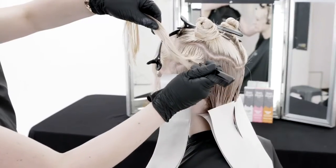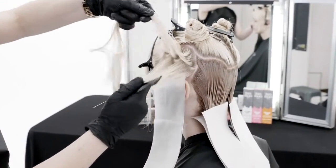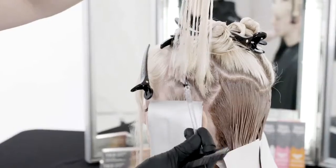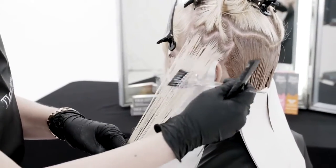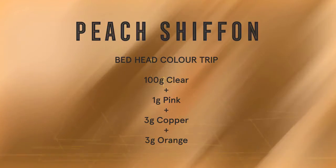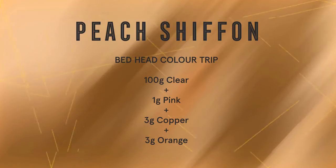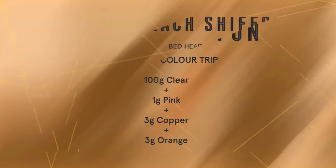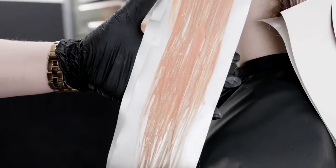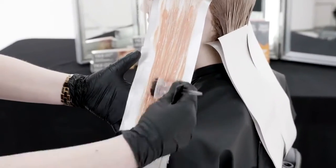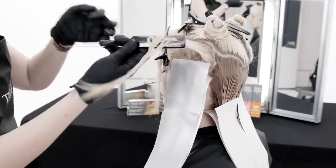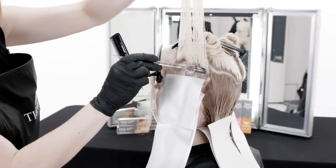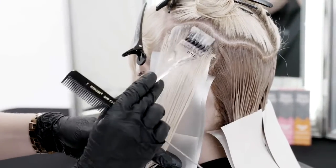From the third zig-zag parting, apply Formula 1 to the new growth and mid-lengths. Then, with a free-hand blending technique, apply Formula 2 to the mid-lengths and ends. Continue working in the same way until the section is complete. Repeat on the opposite side.